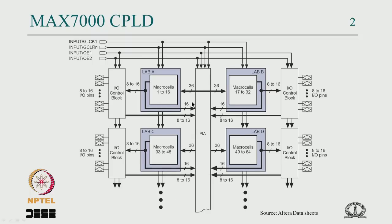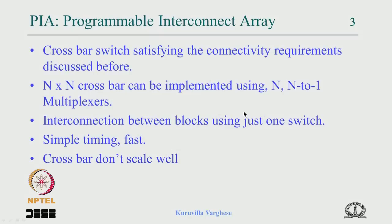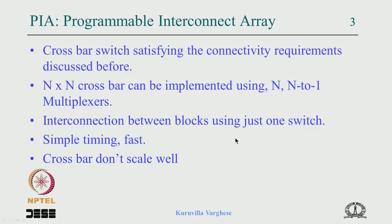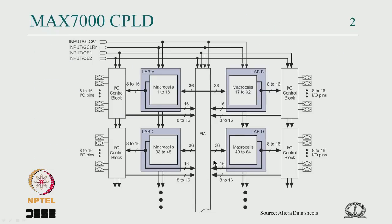You cannot stretch a CPLD to a very large device with many macro blocks because the huge switch doesn't scale. A crossbar of size n×n requires n-to-1 multiplexers, making it very large in area. That is one issue which the field programmable gate array solves. The distributed interconnection architecture in FPGA addresses this scalability problem.